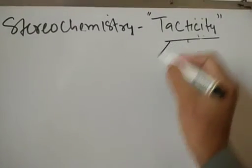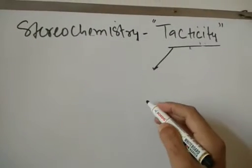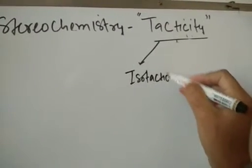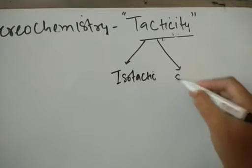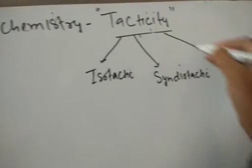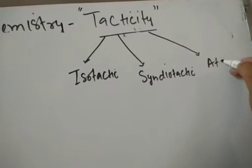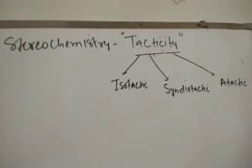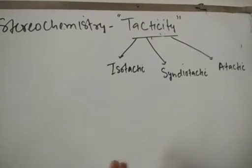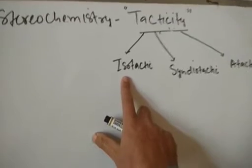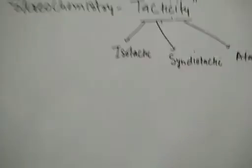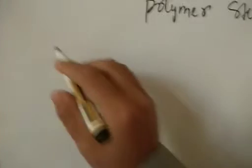Number one: they can be isotactic polymers. Number two: syndiotactic polymers. And then the third one: atactic polymers. So based upon the tacticity, based upon the arrangement of groups on the chiral center in the polymeric chain, the polymers can be divided into isotactic, syndiotactic, or atactic polymers.